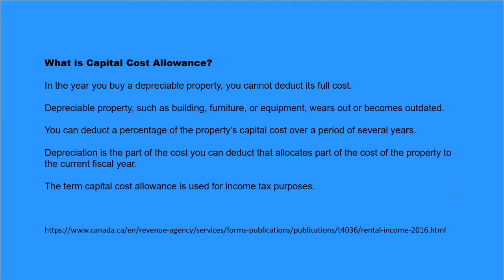What is Capital Cost Allowance? In the year you buy a depreciable property, you cannot deduct its full cost. Depreciable property such as buildings, furniture, or equipment wears out or becomes outdated. You can deduct a percentage of the property's capital cost over a period of several years. Depreciation is the part of the cost you can deduct that allocates part of the cost of the property to the current fiscal year. The term Capital Cost Allowance is used for income tax purposes.